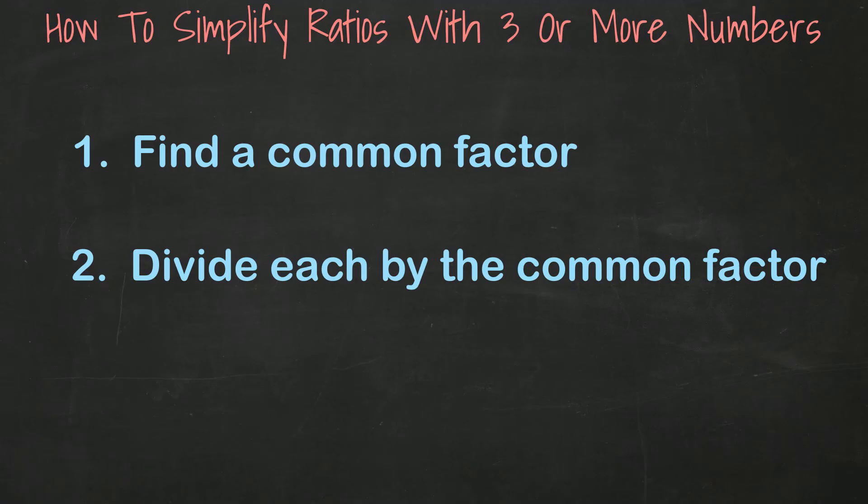The steps to simplifying ratios, whether it's two ratios, three ratios, or ten ratios, is basically the same process. First, you find a common factor between all of your ratios, and then divide each ratio number by that factor.